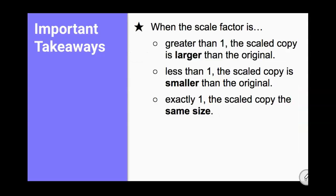When you multiply by a number greater than one, you get a bigger number. So when the scale factor is greater than one, the scaled copy is larger than the original. When the scale factor is less than one, that shrinks the number so the scaled copy is smaller than the original. And when you multiply by exactly one, you're going to get a scaled copy the exact same size.